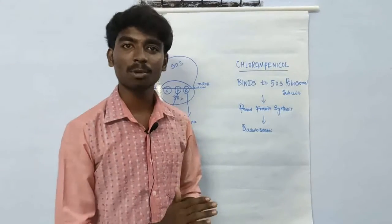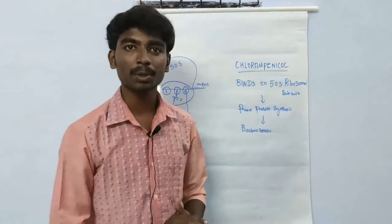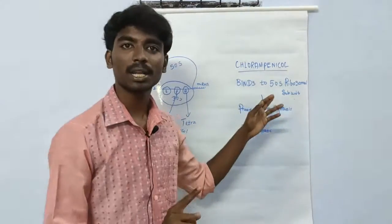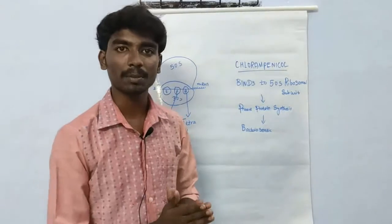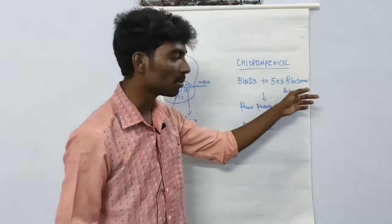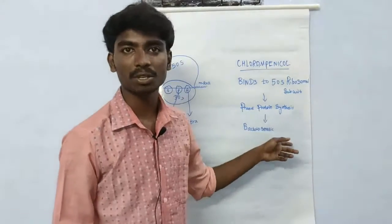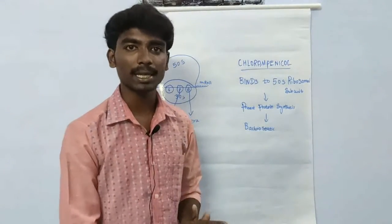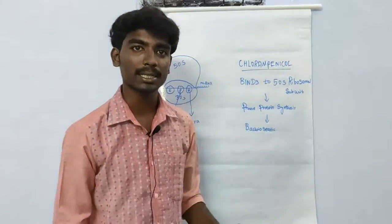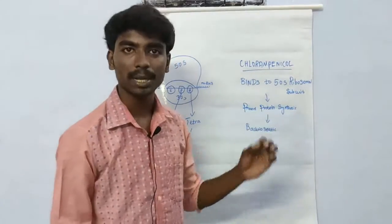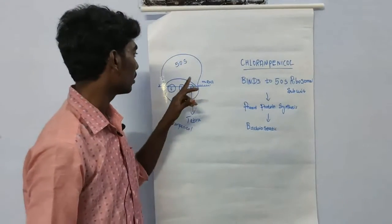Tetracycline binds 30S ribosome. Protein synthesis will be inhibited. Chloramphenicol mechanism: 50S binds. That is chloramphenicol mechanism. Binds to 50S ribosome subunit. Protein synthesis is bacteriostatic. Tetracycline is the same, but it is also binding, but it is 30S ribosome bind. This is 30S ribosome bind.